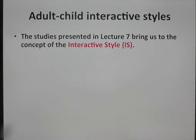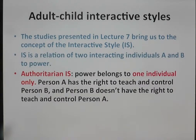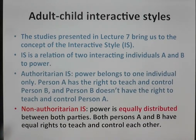The studies presented in Lecture 7 bring us to the concept of the interactive style. Interactive style is a relation of two interacting individuals A and B to power. Authoritarian interactive style means that power belongs to one individual only: person A has the right to teach and control person B, and person B doesn't have the right to teach and control person A. Non-authoritarian interactive style means that power is equally distributed between both parties, and both persons A and B have equal rights to teach and control each other.